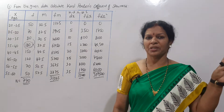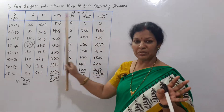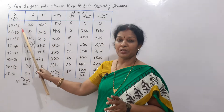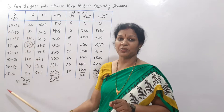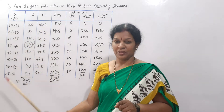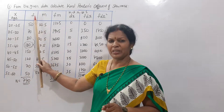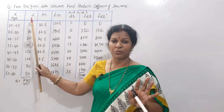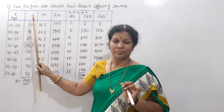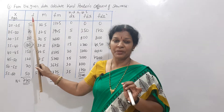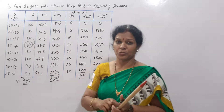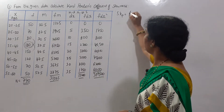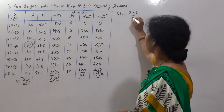We have this problem to solve. We are given class intervals and frequencies. We need to calculate Carl Pearson's coefficient of skewness. SKP is equal to x̄ minus z divided by ρ. This is the formula.